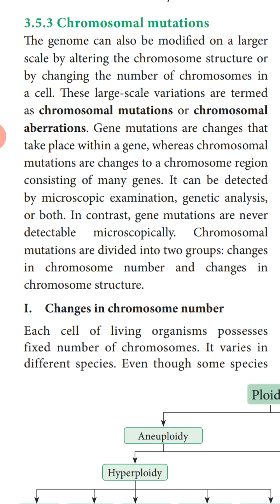Chromosomal mutations are divided into two groups: change in the chromosome number and change in the chromosome structure. So chromosomal mutation means a segment of the chromosome is changing — as a result the structure is changing or the number of chromosomes is changing. Based on this, they are classified into two types: change in chromosome number and change in chromosome structure.